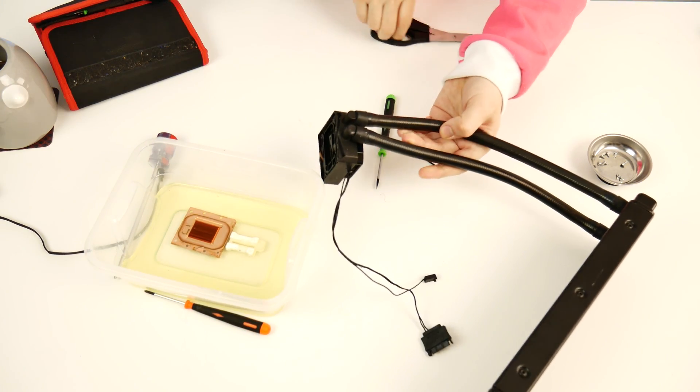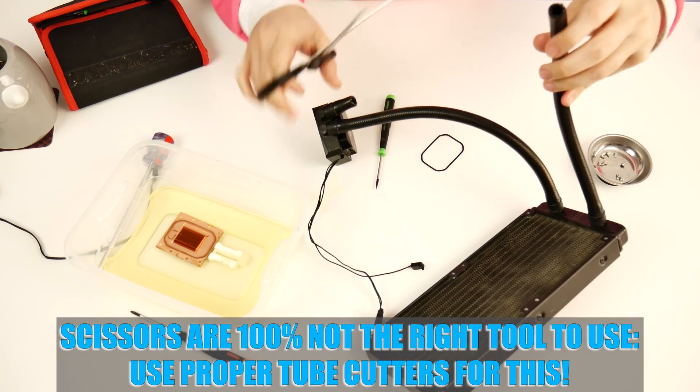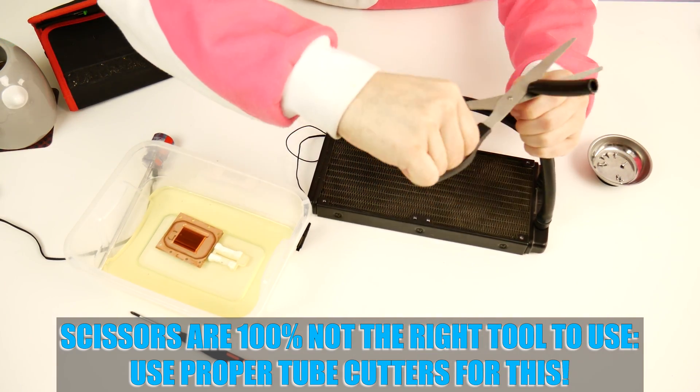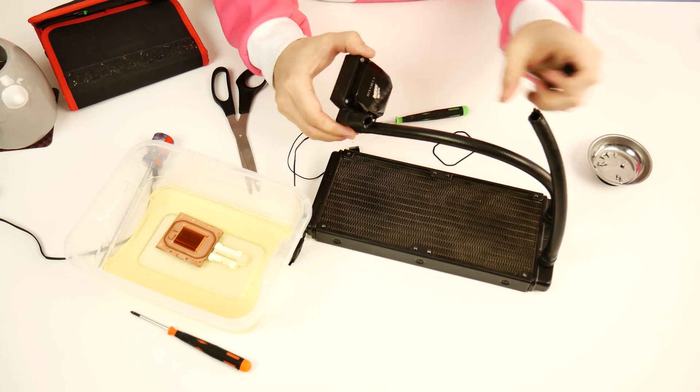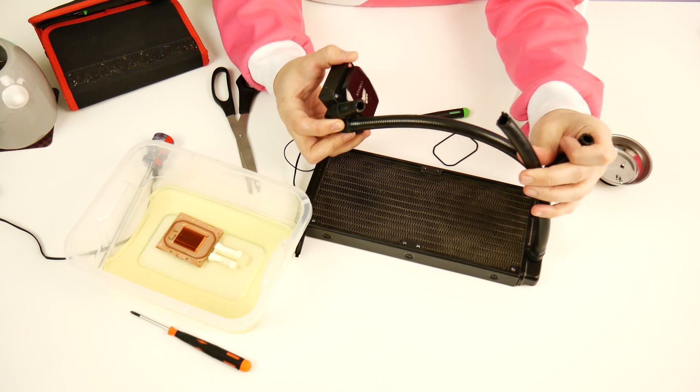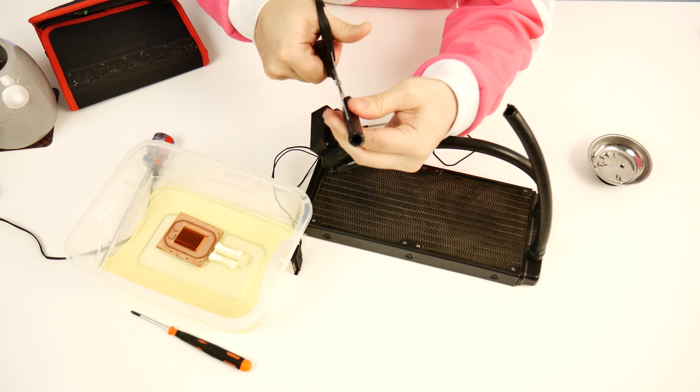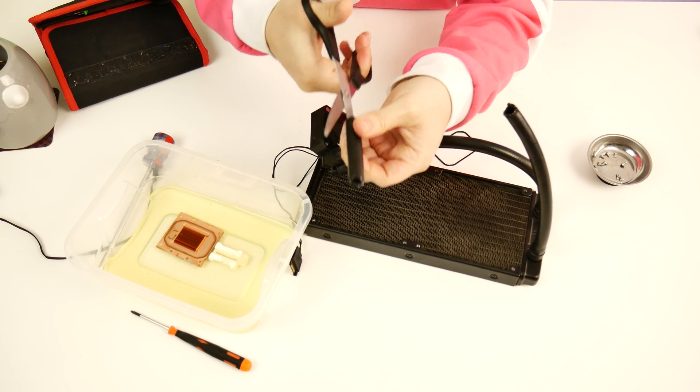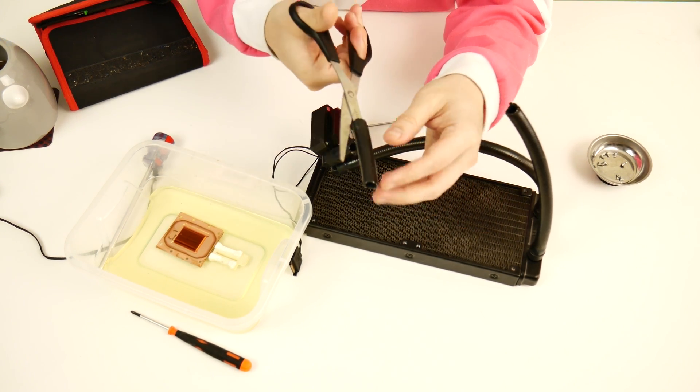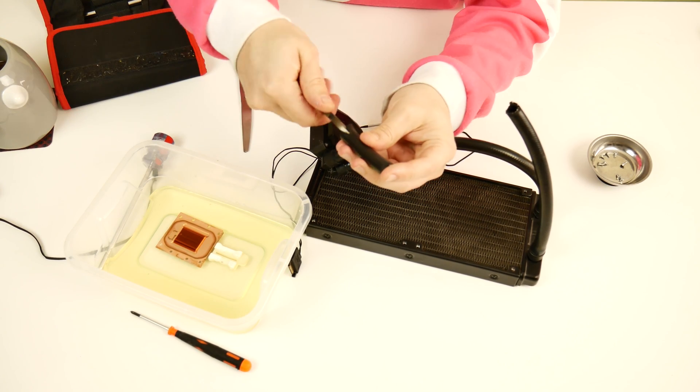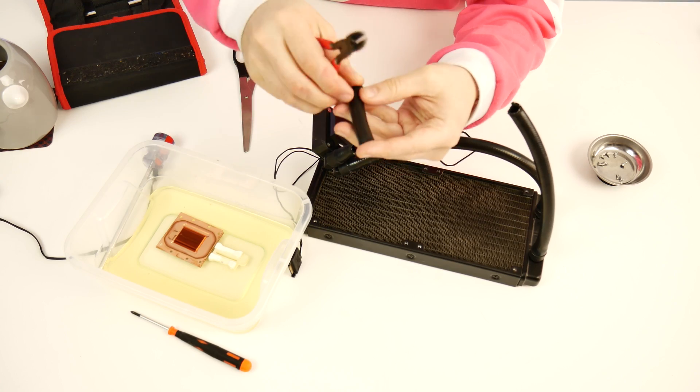All right. Now for the cringy bit that is ultimately going to do in this all-in-one for good. All right. So rip Corsair H100i seven years of good service. All right. So let's get this section of hose splayed down the middle. If we can, by the way, I do not recommend doing what I'm doing right now with the tool I'm doing it with. I know this is a terrible idea. This is just what I happen to have on hand that I could grab.